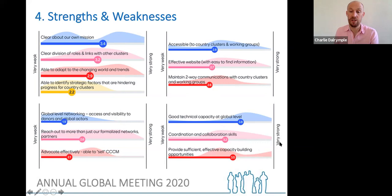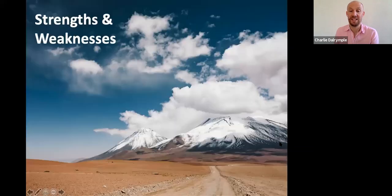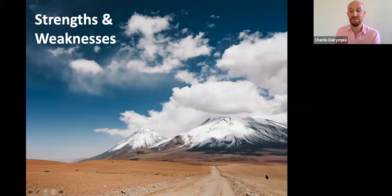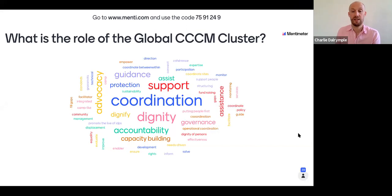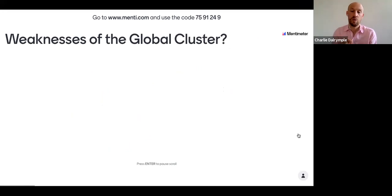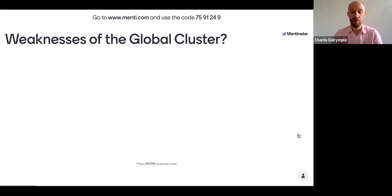Maybe we just hand the mic over to you. Let's ask you what you think about strengths and weaknesses. Let's do another Menti — grab your phone, same number. Starting with weaknesses: what would you say the weaknesses of the global CCCM cluster are? Just jot down what you think the weaknesses of the cluster are at global level — we're not thinking at country or regional level, we're thinking at global level. Just take a minute to do that.